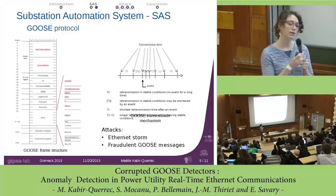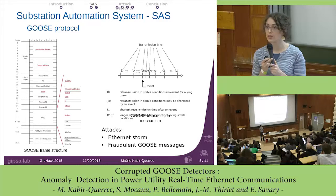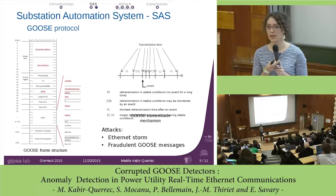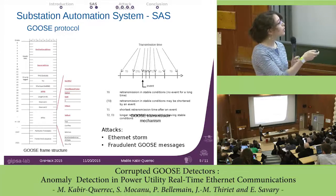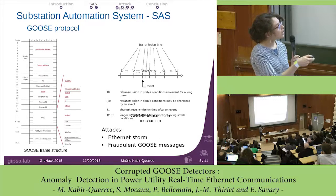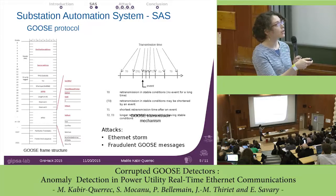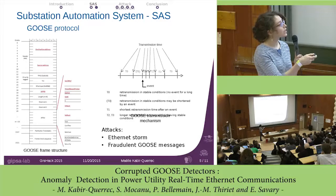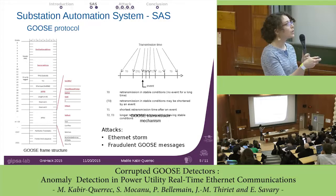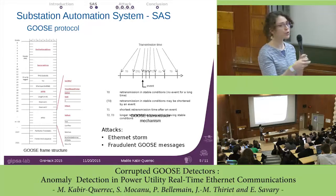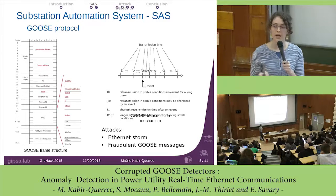GOOSE is a multicast protocol, meaning there is no acknowledgement of reception. To make the protocol more reliable, there is a specific transmission mechanism. When a data value changes, a new GOOSE message is sent — this is what I call an event. First it will be sent at a very high frequency T1, then this frequency is divided by two, going at a slower pace T2 and then T3, until stable conditions are reached and a normal pace T0 is maintained. These frequencies depend on your devices and can be configured.